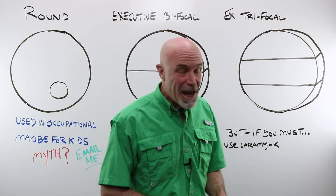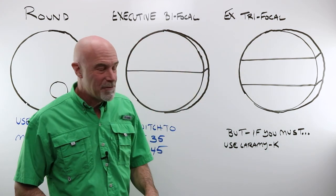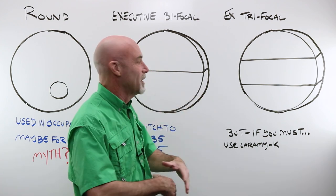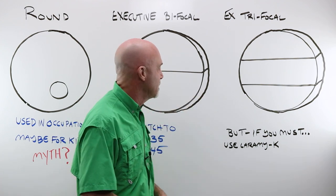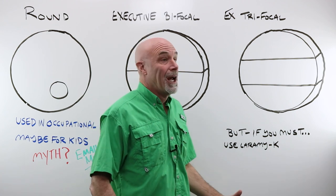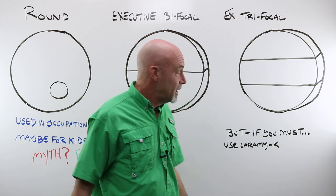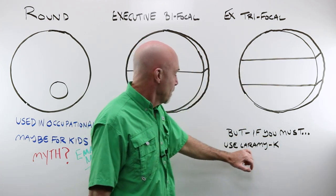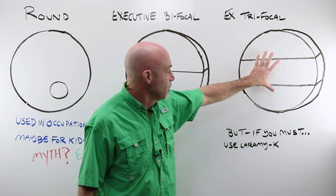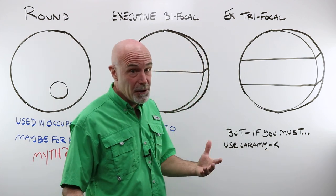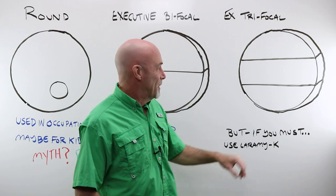Last, we have our executive trifocal. That thing there. Yeah. Look, I don't hide it. I hate those lenses for a wide variety of reasons. However, I understand that they are still sold, people still use them. I would strongly encourage you not to do it. But if you must make or use an executive trifocal, use a great lab like Laramy-K. We'll do a little prism thinning on it, giving you a slightly better profile, a little thinner, a little bit lighter, and maybe you'll get a little bit better cut out.